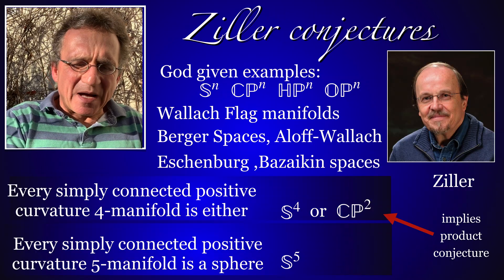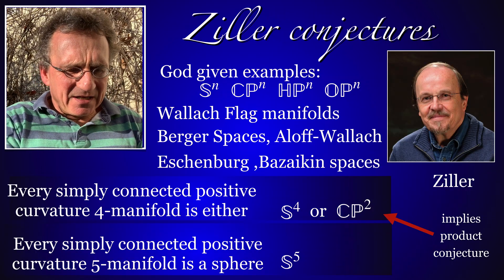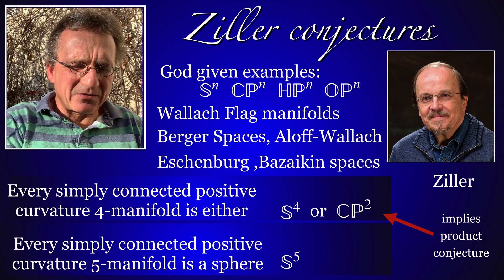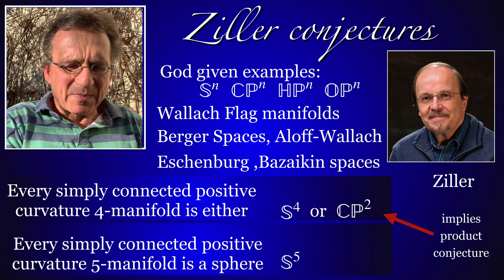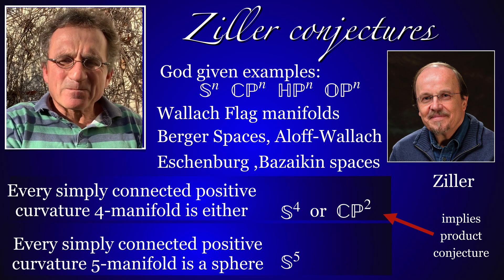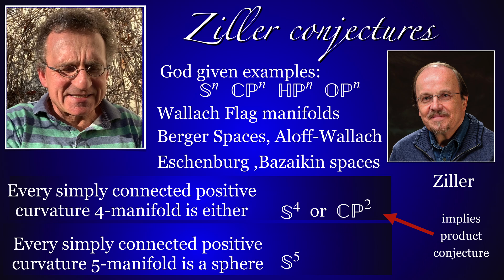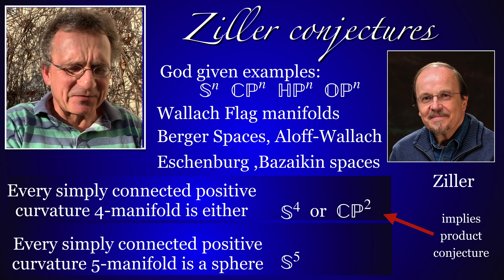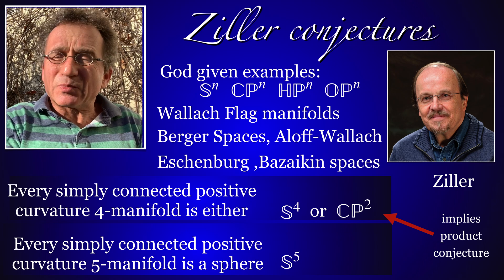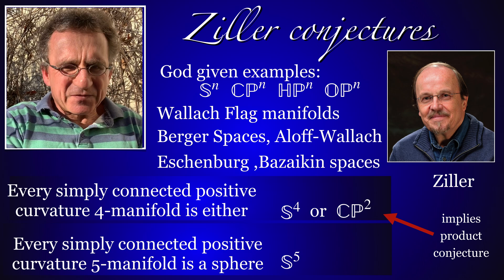A lot of examples of manifolds with positive curvature have been constructed. An interesting conjecture of Ziller states that every simply connected positive curvature four-manifold might be either the four-sphere or the complex projective plane, and also that in five dimensions any simply connected positive curvature manifold could be a sphere. The first statement would settle the product conjecture of Hopf.